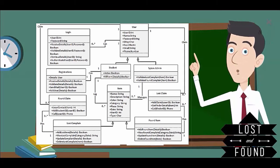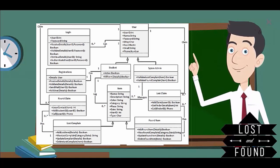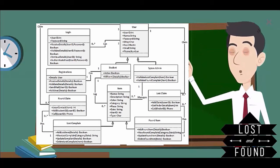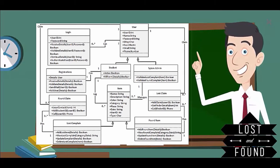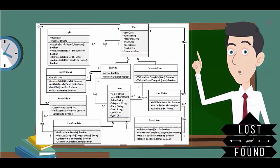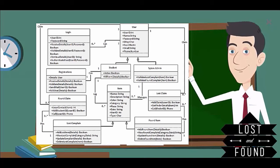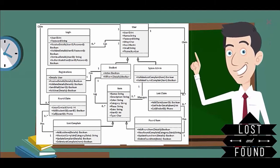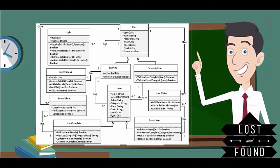The registration class consists of details as the type of user class and is related to the student class in a one-to-one relationship — one student can register only once. The item class is inherited by the lost complaint and found item classes, with attributes: name, description, color, category, place, date, user ID, and item type. We also have two more classes — found claim and lost claim. One lost complaint can have multiple found claims, while one found item can have one lost claim.